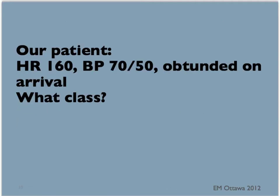Let's go back to our patient. His vital signs after the breathing assessment are as follows: heart rate of 160, blood pressure of 70 over 50, and he was obtunded on arrival. What class of shock would he be in? As you can see, his heart rate is high, blood pressure is low, and there's also a true decrease in level of consciousness. He will be in class 4 shock and will need fluids and blood.